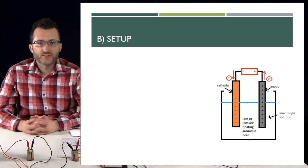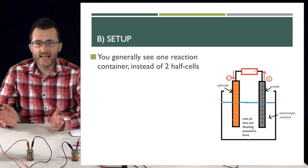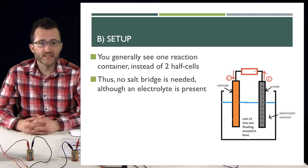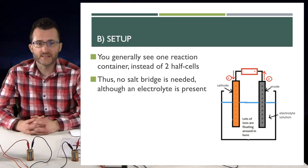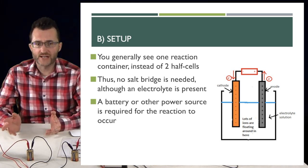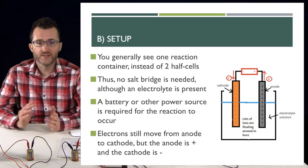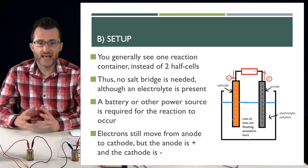The setup for electrolytic cells. You generally see one reaction container instead of two half cells. Thus, no salt bridge is needed, although an electrolyte is present. A battery or other power source is required for the reaction to occur. Electrons still move from anode to cathode, but the anode is positive and the cathode is negative.